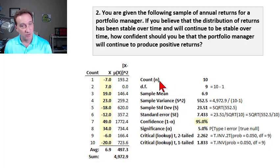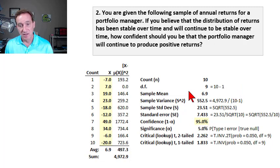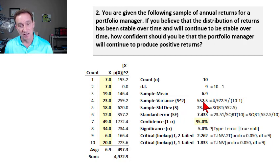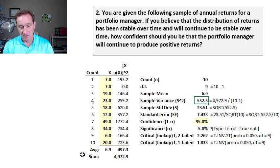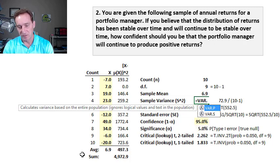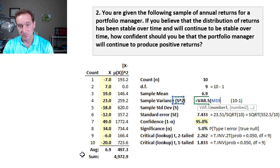We have count n equals 10. With a sample generally less than 30, we have a small sample. Our degrees of freedom is n minus 1 for a test of the sample mean, so degrees of freedom here is 9. The sample mean is just an average of the given values: 6.9. The sample variance is the sum of the squared differences divided by degrees of freedom or n minus 1, giving 552.5. In Excel we use the VAR.S function - dot S, not dot P - and should get that same 552.5.